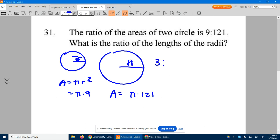So the ratio of the lengths of the radii would be 3 to 11. And all we really have to do, knowing that we're doing r squared and trying to go backwards, is take the square root of each one of those numbers to get the ratio, which again is 3 to 11.